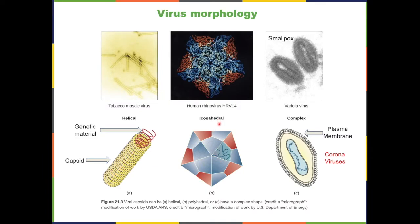Icosahedral viruses, like human rhinovirus, also have a protein capsid surrounding the genetic material. Smallpox and the current coronavirus are complex viruses — they have an outer plasma membrane. That's why washing your hands with soap is probably the most effective way to prevent catching this virus, because soap dissolves the plasma membrane.